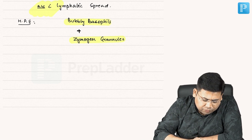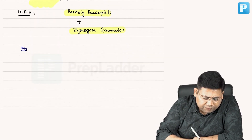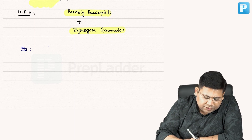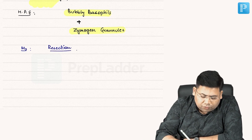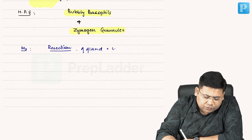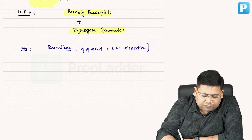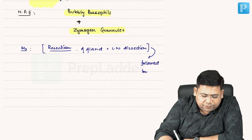Now let us go for the management. Howsoever it is, management is resection — resection of the gland — plus lymph node dissection, followed by radiotherapy.